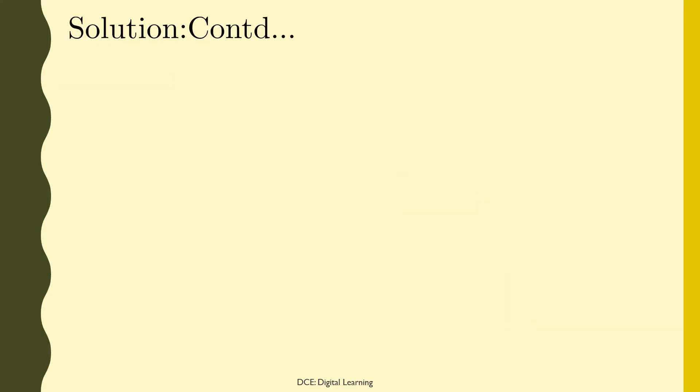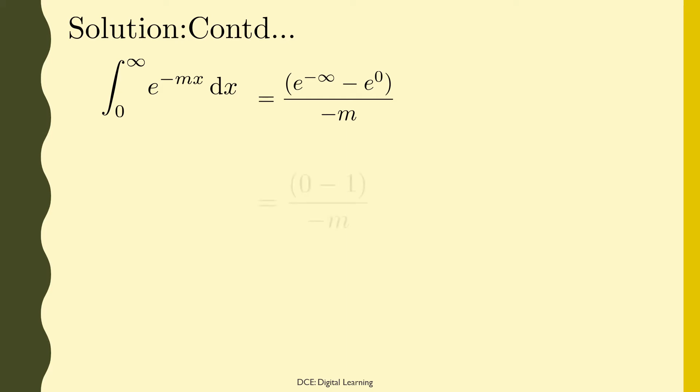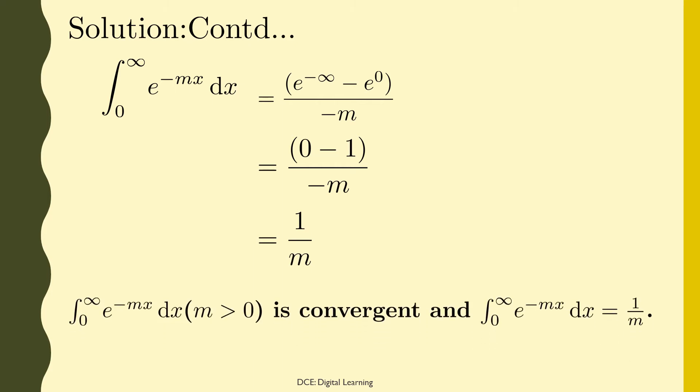So the given integral equals [e^(−∞) − e^0]/(−m), which equals (0 − 1)/(−m), since e^(−∞) equals 0, which equals 1/m. Therefore, the integral of e^(−mx) dx from 0 to infinity, where m > 0, is convergent and its value is 1/m.